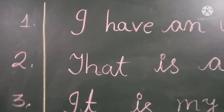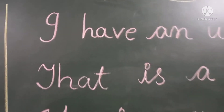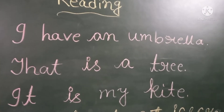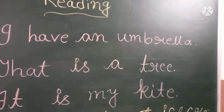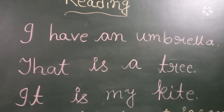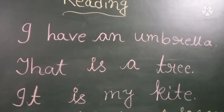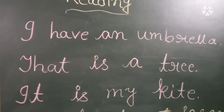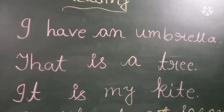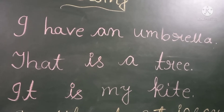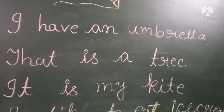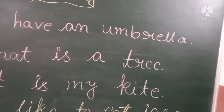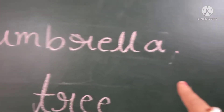Just see everybody, number one — I have written: 'I have an umbrella.' Whenever you want to write any sentence, the beginning letter should be capital and at the end of the sentence you have to give one full stop.